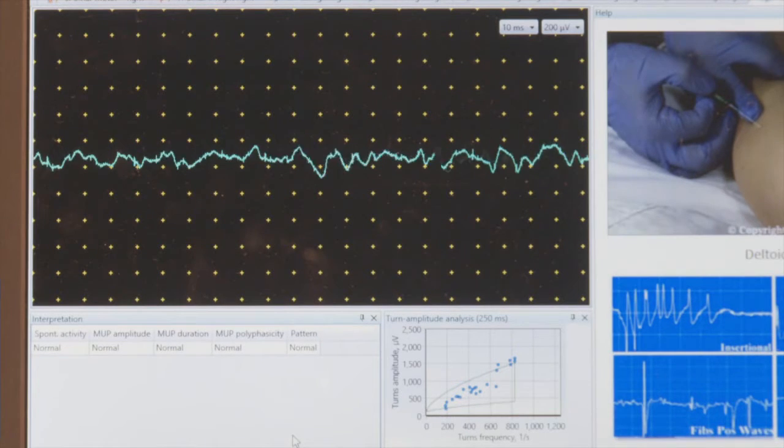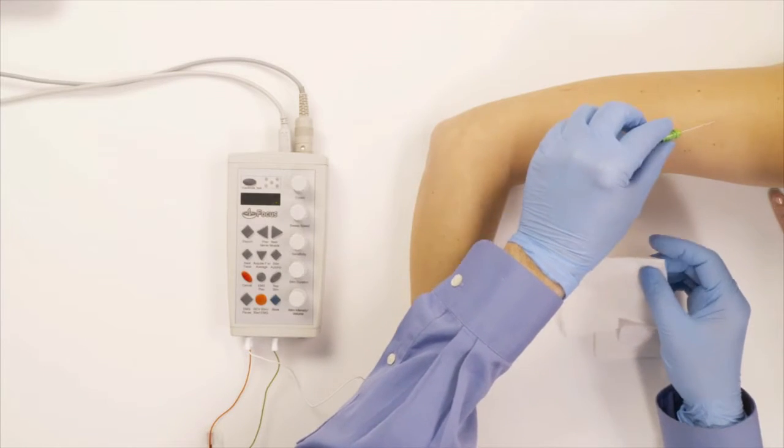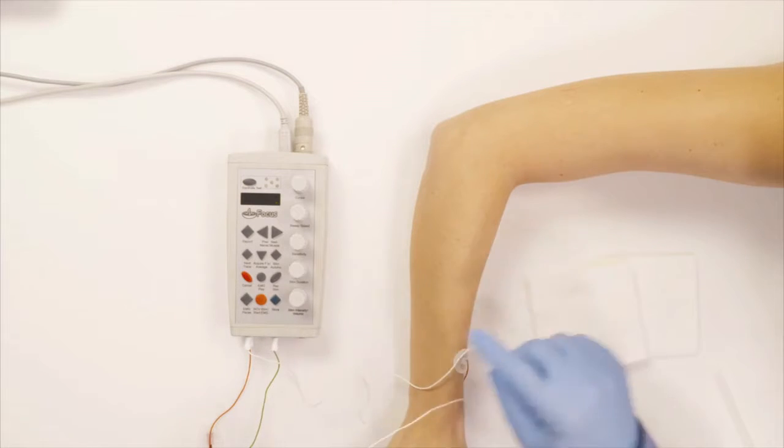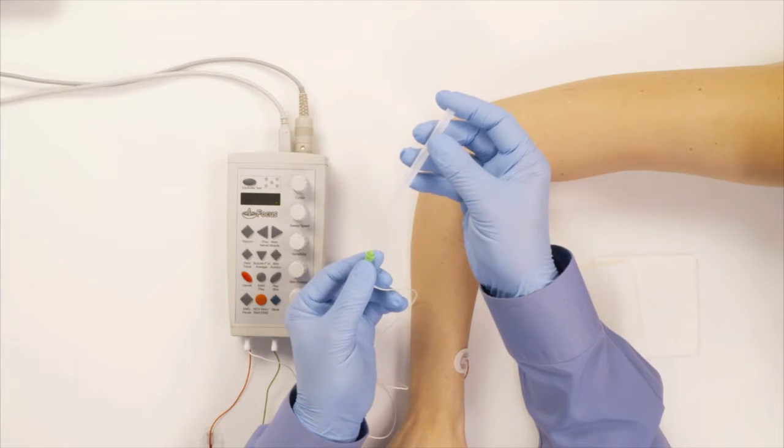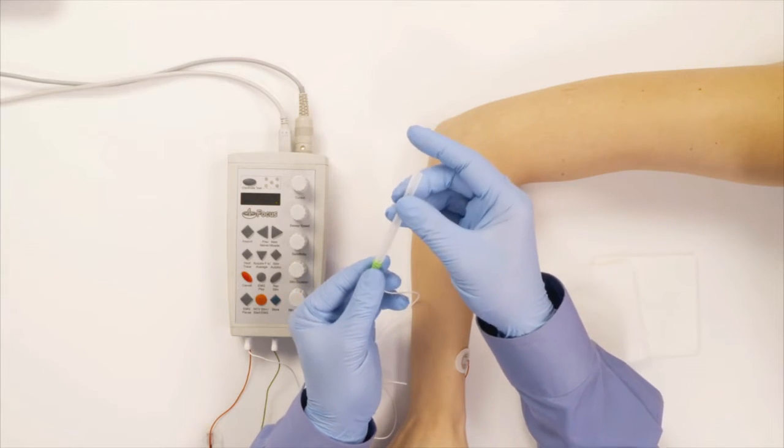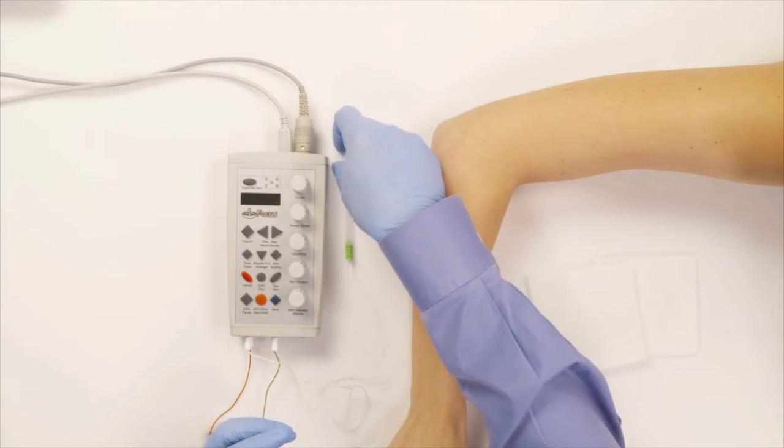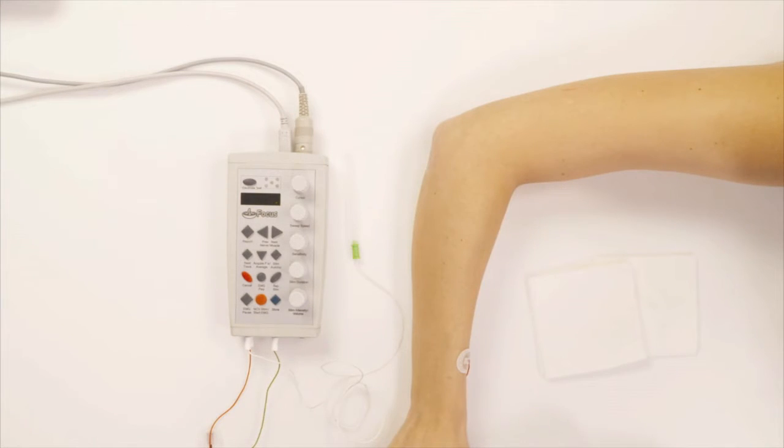And that's the deltoid and I'm gonna take the needle out and make sure she's not bleeding. And as soon as I take the needle out I'm gonna sheath it again, make sure you don't stick yourself. Here we go and now I'm done with the upper extremity.